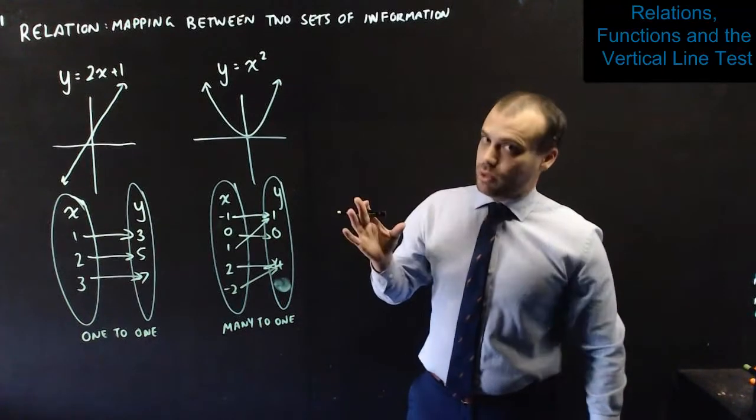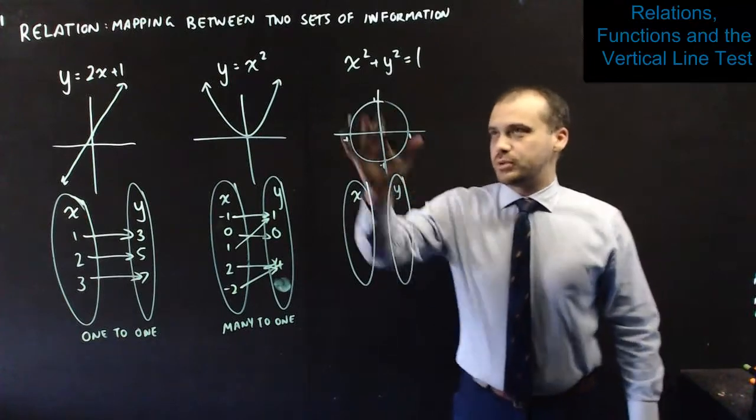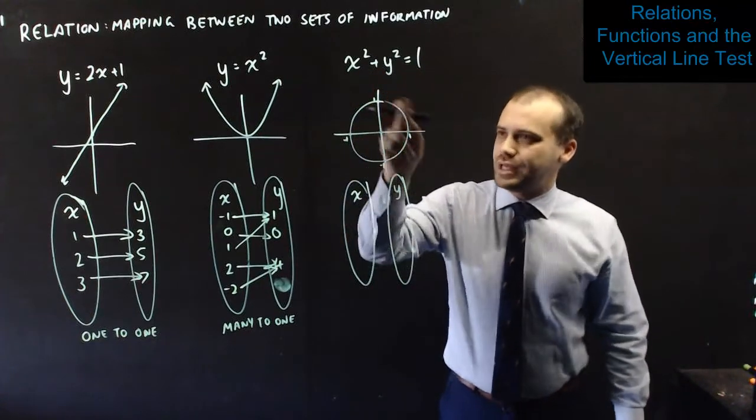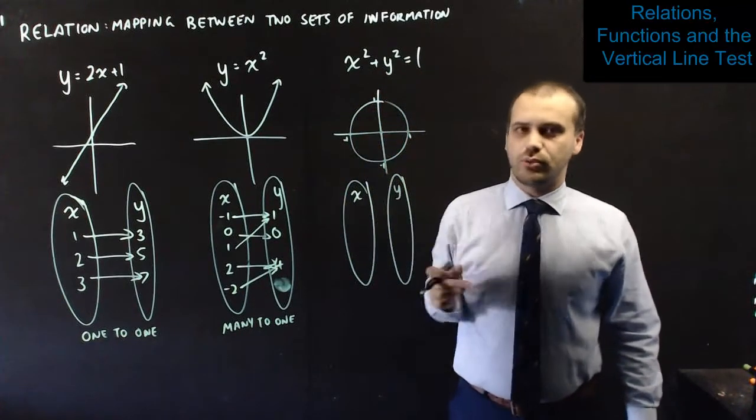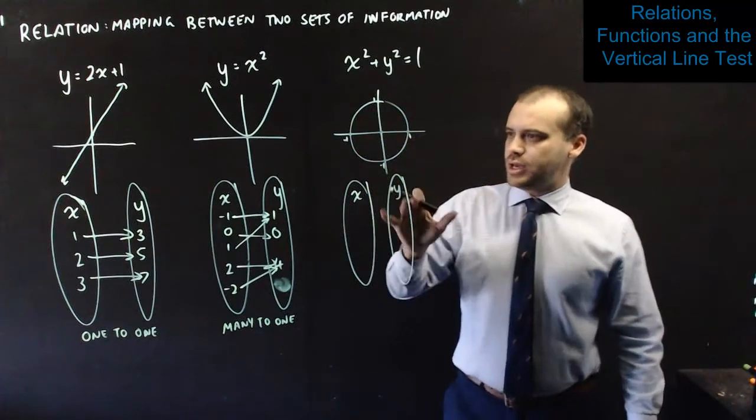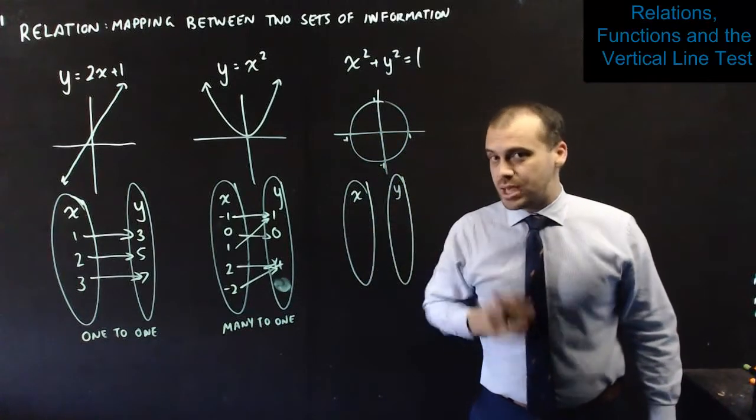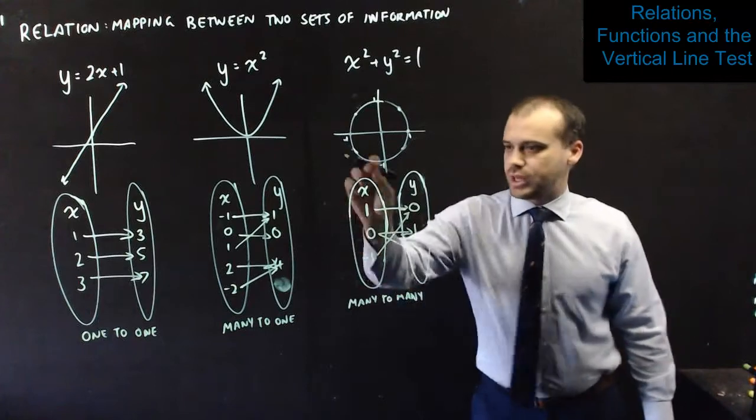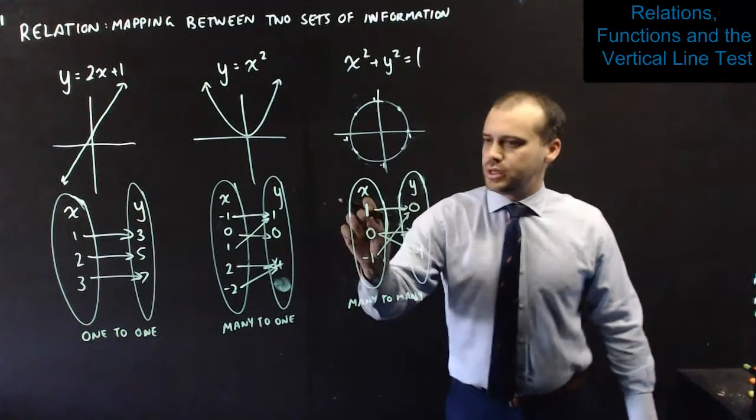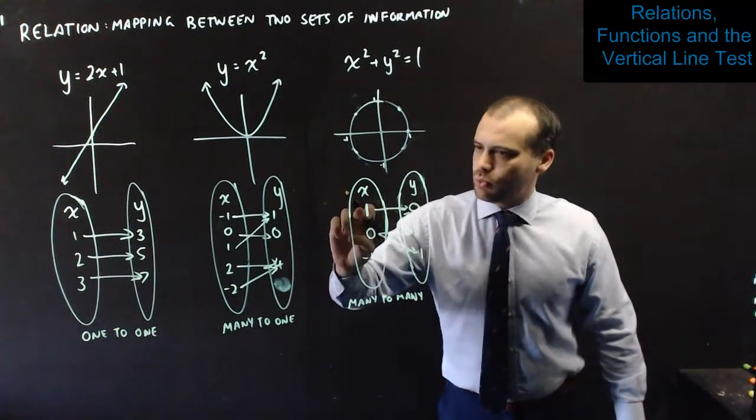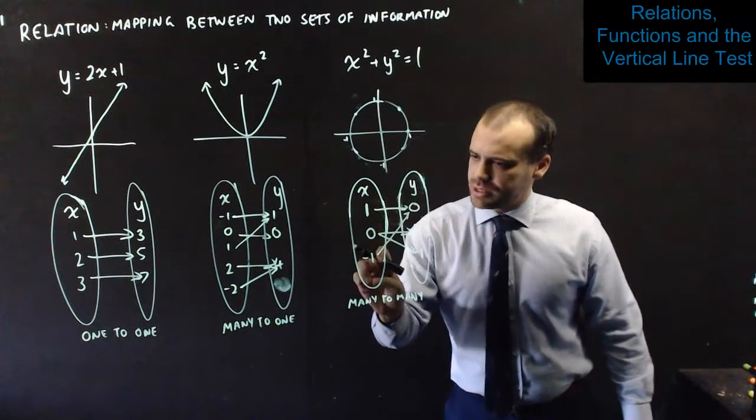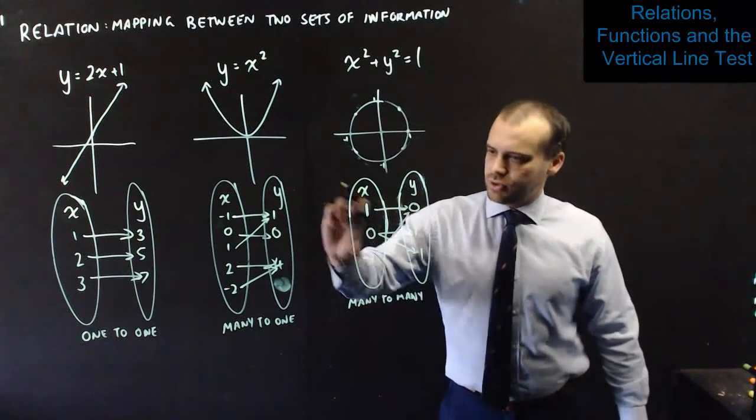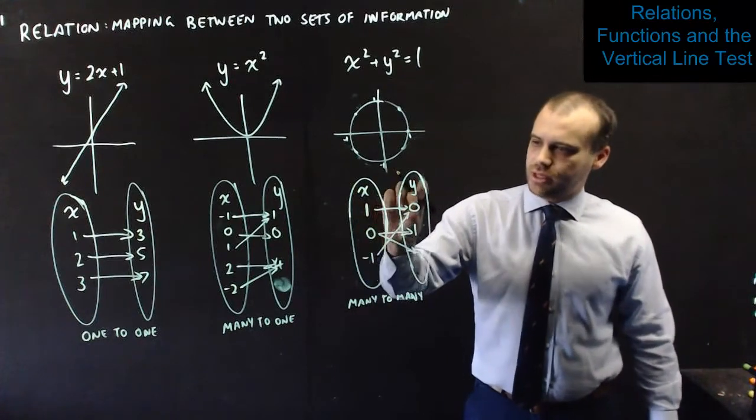And then there is the big one. There's this one, which you might not be familiar with: x squared plus y squared equals 1. It's a circle with a radius of 1. Now, this is what's called a many-to-many relationship. To illustrate that, I just need these three points here. You can see that when x is 1, y is 0. But also when x is negative 1, y is 0. So, we've got that many-to-one happening there.